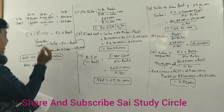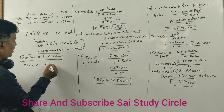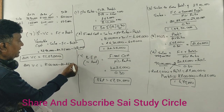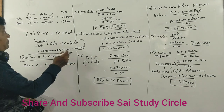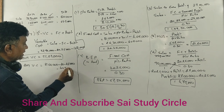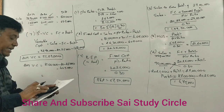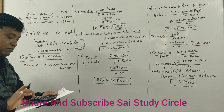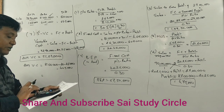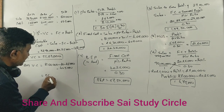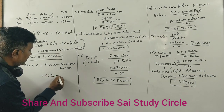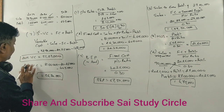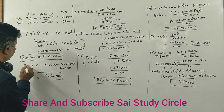For 2020: Sales are 81,00,000, Fixed Cost is 20,25,000, Profit is 4,50,000. So Variable Cost = 81,00,000 − 20,25,000 − 4,50,000 = 56,25,000 rupees. That is the Variable Cost for 2020.